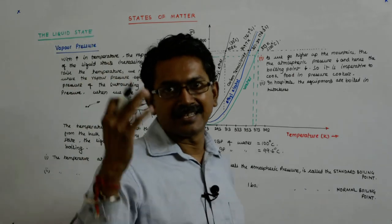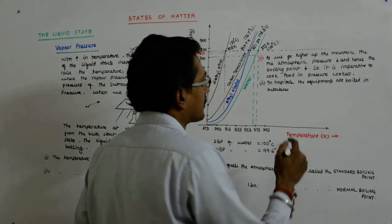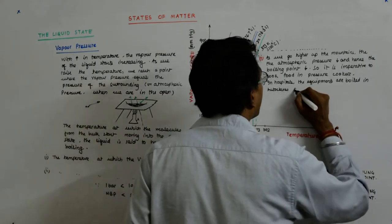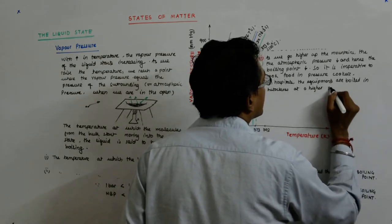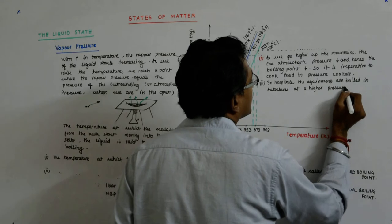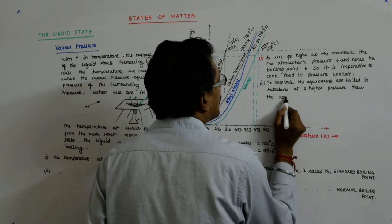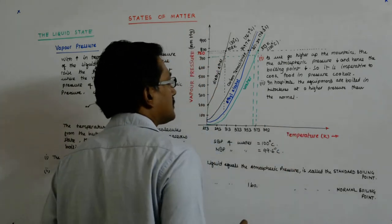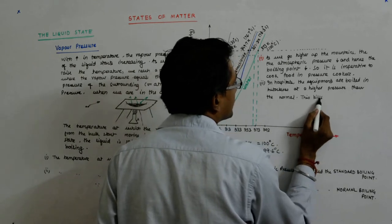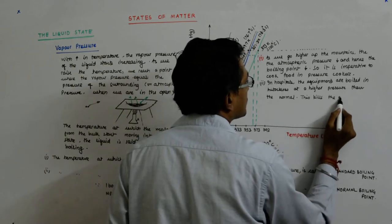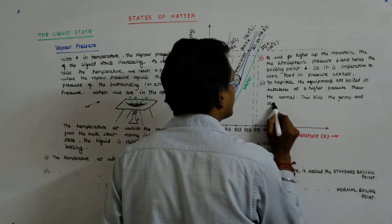When it boils, many of the germs get killed at the higher temperature. Equipment is boiled in autoclaves at a higher pressure than normal. This kills the germs and sterilizes the equipment.